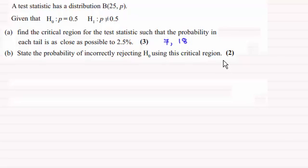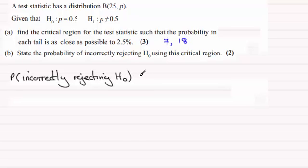So how did you get on? Well, first of all, I just want to put an intro here: the probability of incorrectly rejecting the null hypothesis. So we'll just write here probability of incorrectly rejecting the null hypothesis. How are we going to get that result?